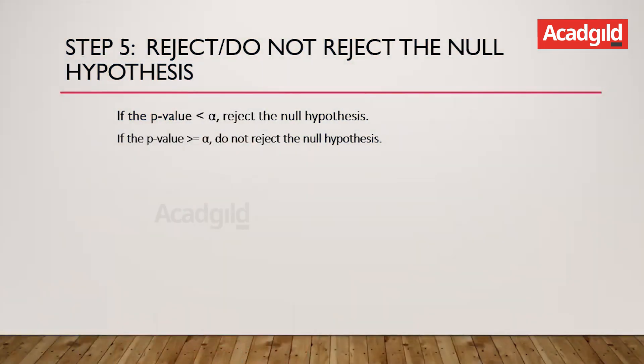Step five is to reject or not reject the null hypothesis. If the p-value is less than alpha, we reject the null hypothesis. If the p-value is greater than or equal to alpha, we do not reject the null hypothesis.